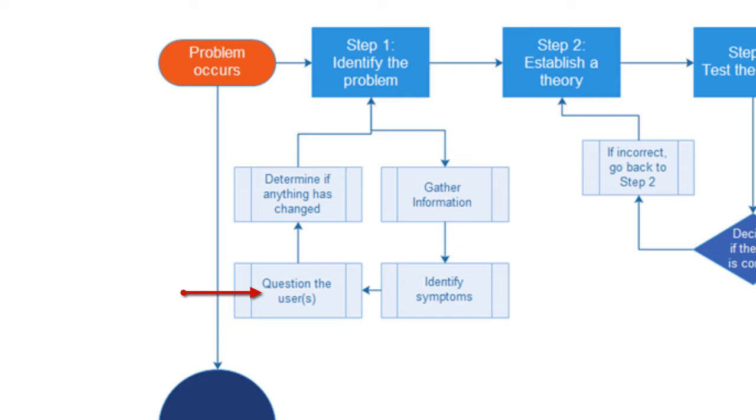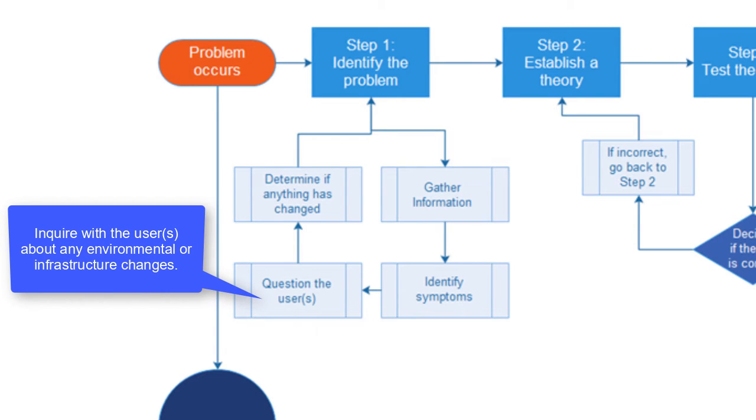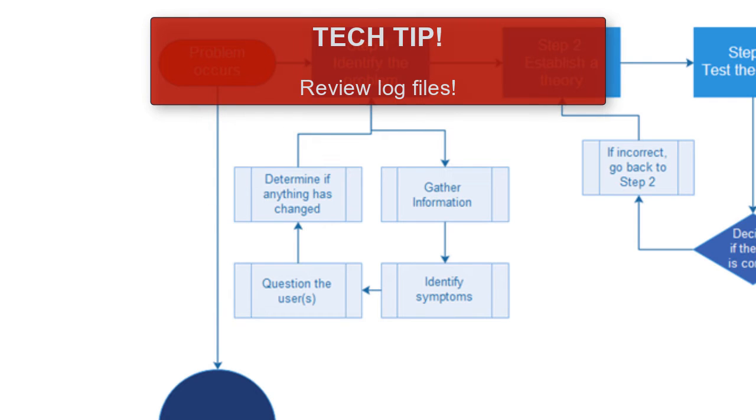Then you want to question the user. You're not blaming the user. You're just questioning the user to find out what happened to the computer, were any changes made. Determine if anything has changed since the last time the computer worked. That's all part of step 1. You're not doing anything really to the computer, but you're identifying what the problem is. Also during step 1, you want to inquire with the user or users regarding any environmental or infrastructure changes. And you should also review the system and application logs and any other logs that you can get your hands on.